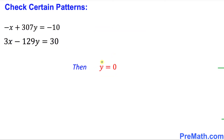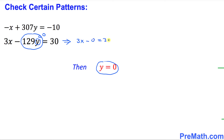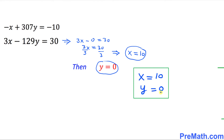So once we figured out y equals 0, we can plug it into any of these equations to get the x value. Let's put y equal to 0 in the second equation. That means this whole term becomes 0, giving us 3x minus 0 equals 30. That means 3x equals 30. Dividing both sides by 3, our x value turns out to be simply 10.